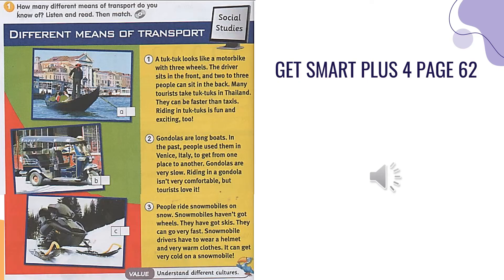We are going to read a reading text from Get Smart Plus 4, page 62. You can get ready with your textbook. Listen and read together. How many different means of transport do you know of? Listen and read, then match.